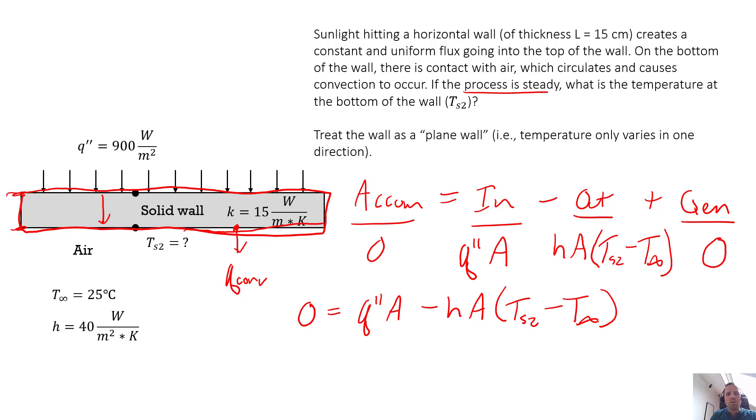We have one equation. How many unknowns do we have? Well, area technically is an unknown, but that can just cancel out. So while we may have chosen a basis of one meter by one meter, it doesn't really matter. That term just drops out. And that's something that you just learn to do with experience. So now we take our energy balance. We know Q double prime. We know H. We do not know TS2, but we know T infinity. So we can solve this and we get TS2 is equal to Q double prime divided by H plus T infinity.